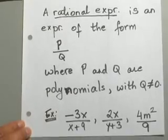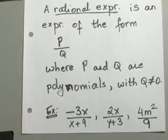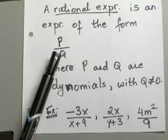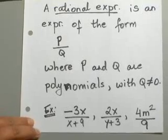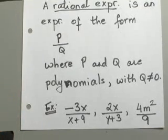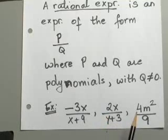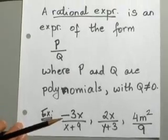So when you have a rational expression of the form P over Q, again, your denominator, your Q, cannot equal 0 because you cannot divide by 0. And you can see some examples here on what you can expect to see of a rational expression: negative 3X over X plus 9, 2X over Y plus 3, 4M squared over 9. These are all examples of different types of rational expressions.